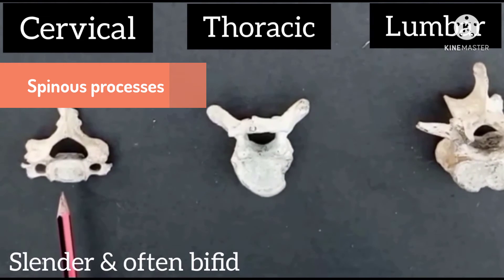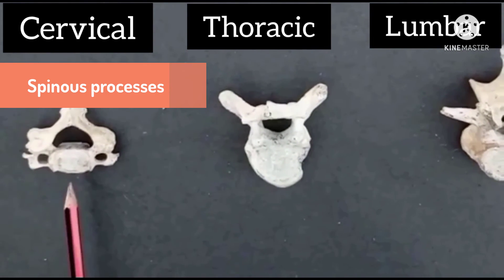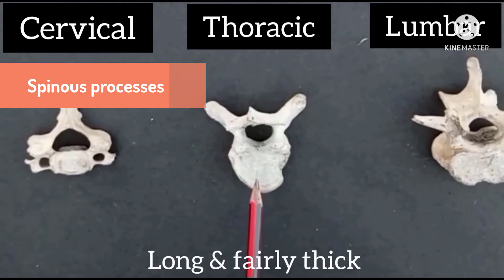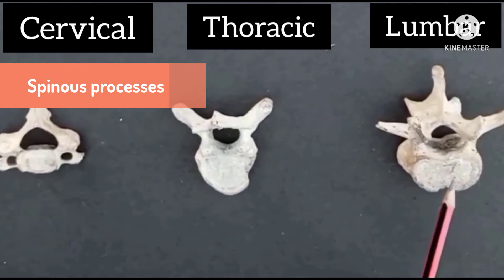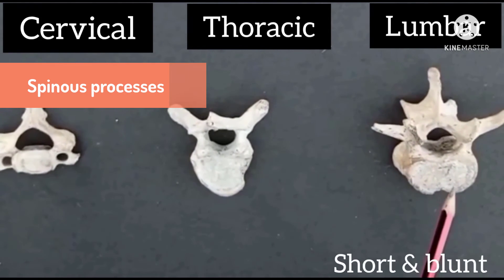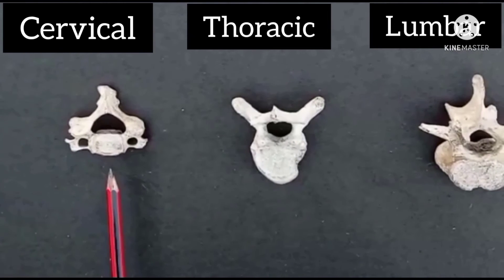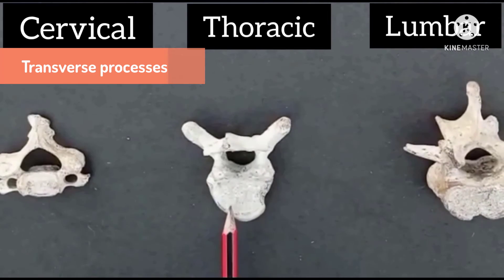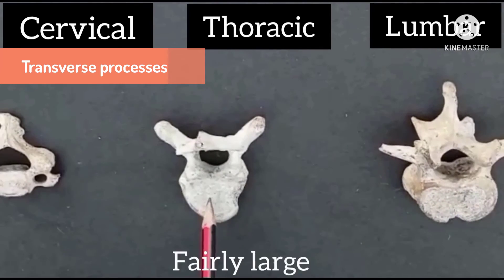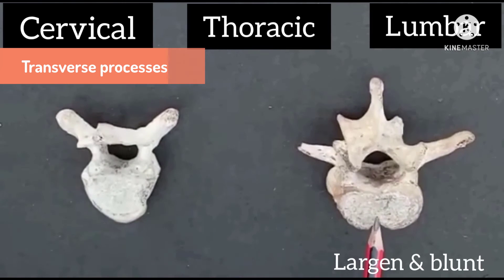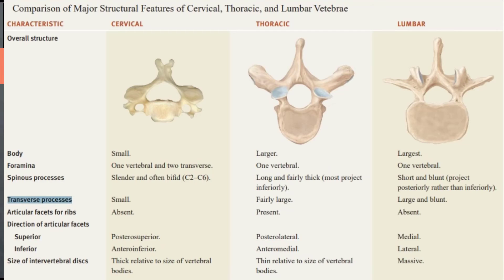The spinous process of the cervical bone is slender and bifid. The thoracic bone spinous process is long and fairly thick, and the lumbar bone spinous process is short and blunt. The transverse process of the cervical bone is small, the thoracic bone fairly large, and the lumbar is larger and blunt.